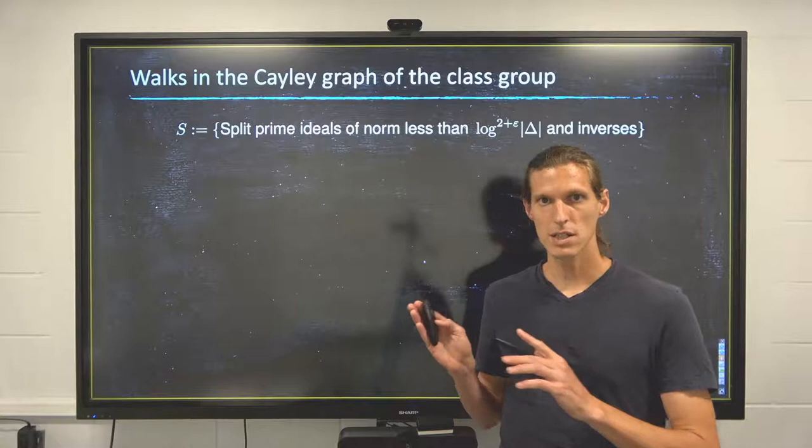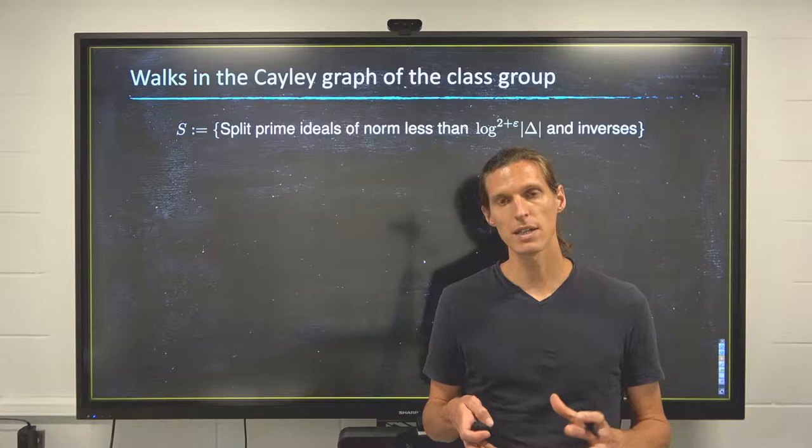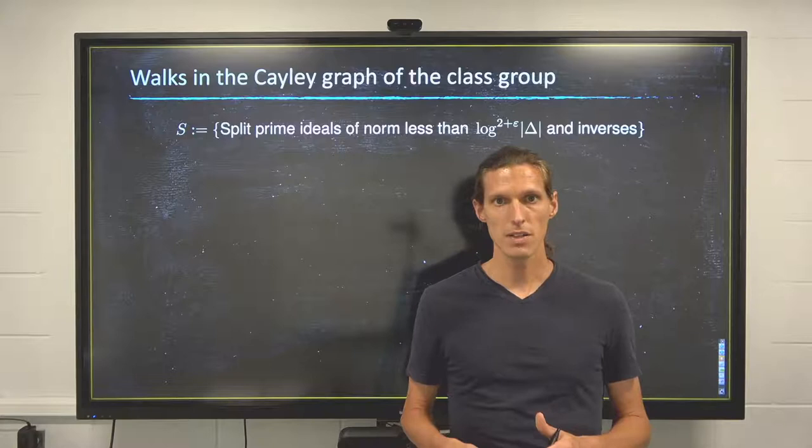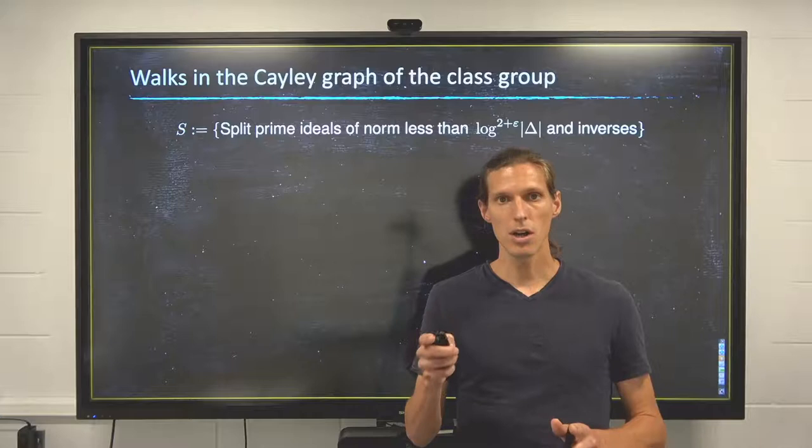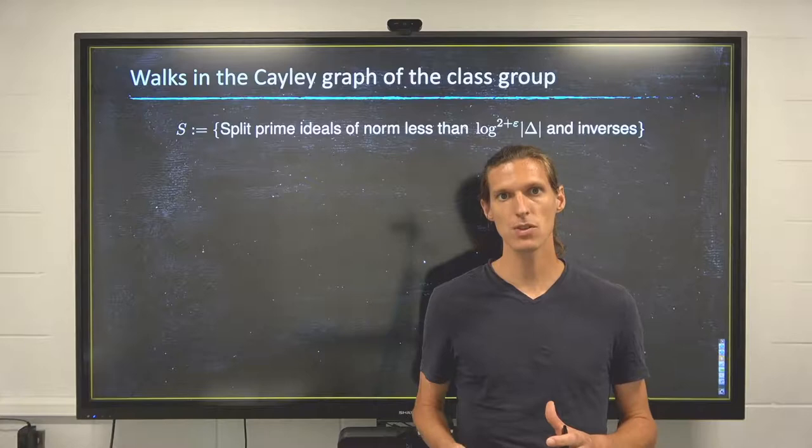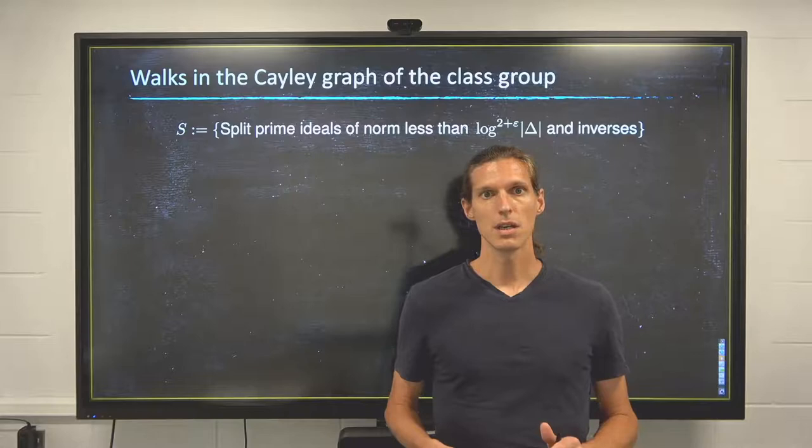Now it turns out, given that we're looking for proving some rapid mixing properties, which is more than just mere connectivity of the graph, we need to use a slightly larger set of elements. The elements we'll consider for the Cayley graph of the class group are the classes of the prime ideals of norm up to log to the power 2 plus epsilon of delta and their inverses. That's because we'll need such a slightly larger set in order to prove the properties we want with the Cayley graph of the class group.